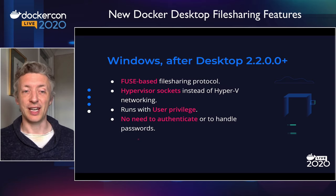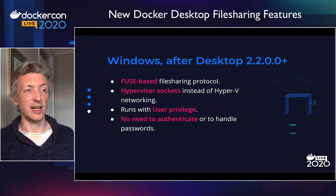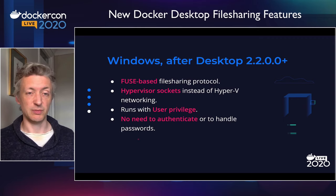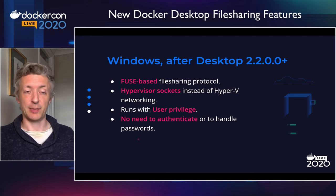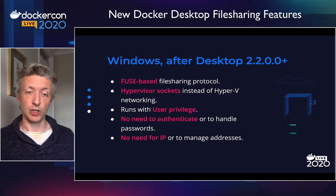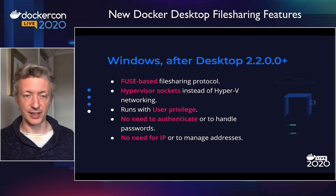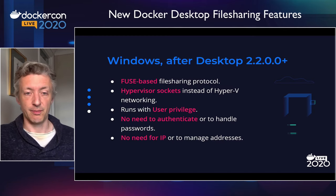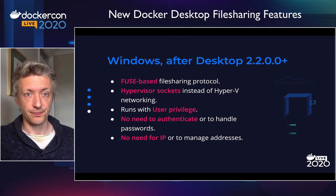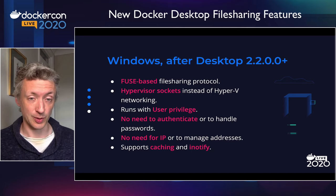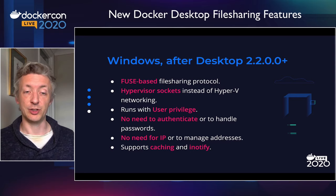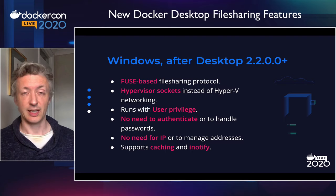Similarly, we don't need any authentication, because there's no SMB server anymore — no username and password involved. It's just connections from the VM to the process on the host, asking if they can read and write files. No authentication required; it's all secure because of the hypervisor sockets. And no need for IP or managing addresses, which simplifies the user experience. People can log in with smart cards and Azure AD works. We also added caching — as much caching as possible, because caching is important for performance. And we're able to implement iNotify, which is something we could do on the Mac as well with a similar Fuse-based implementation. So now we have caching and iNotify on Windows by default as of 2.2.0.0.